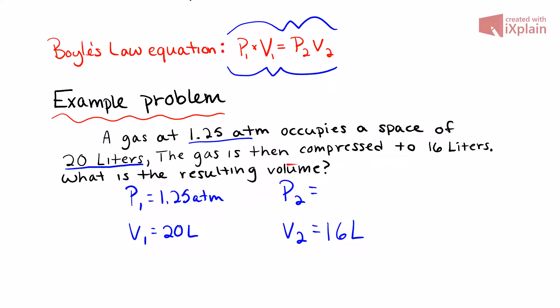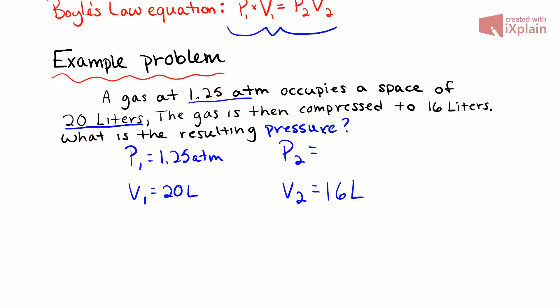What is the resulting pressure? That's what we're looking for here. To do this, all we have to do is plug these into our equation. So we go P1 times V1 equals P2 times V2. Our P1 is 1.25 atmospheres, our volume is 20 liters, and that equals P2—we don't know that yet—times 16 liters.